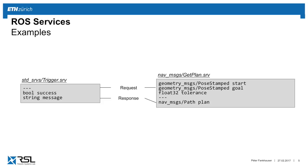Here are two examples. On the left-hand side, we have the trigger service from the standard services. The request is empty — for example, if you want to trigger an emergency stop. The response would indicate success, and you can additionally define a readable message, such as 'vehicle successful emergency stop'. On the right-hand side, a more complicated example: a motion planner to compute a plan. The request would contain a start pose, a goal pose, and some tolerances. The service server would get this request, plan the path, and as a response would fill in the plan — the service client would get back a full motion plan.